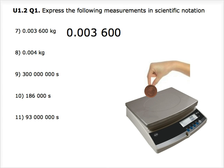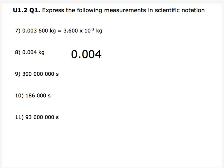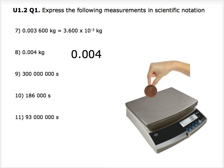Question 7: we have 0.003600 kilograms. We have to move the decimal point three times to the right, giving us 3.600 times 10 to the power of negative 3. Question 8: we have 0.004 kilograms. Moving the decimal point three times to the right, we will have a final answer of 4 times 10 to the power of negative 3.